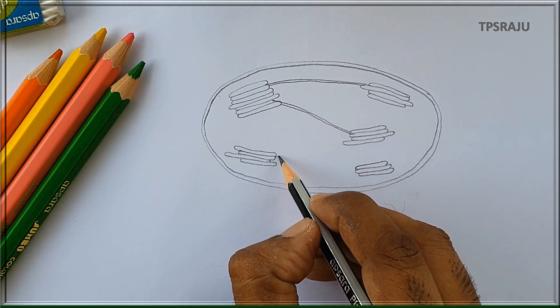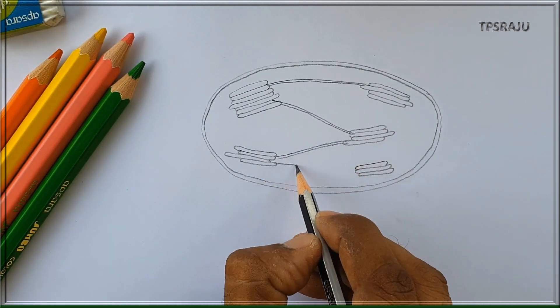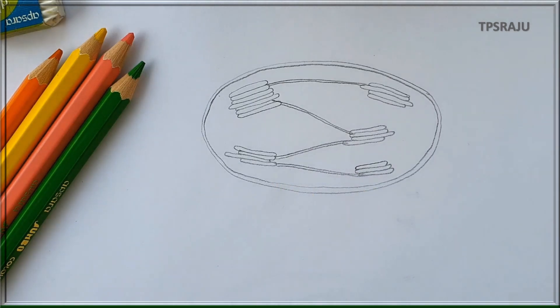These are connected by stroma thylakoids. The remaining space is filled with a liquid called stroma. Dark reactions of photosynthesis occur in stroma.